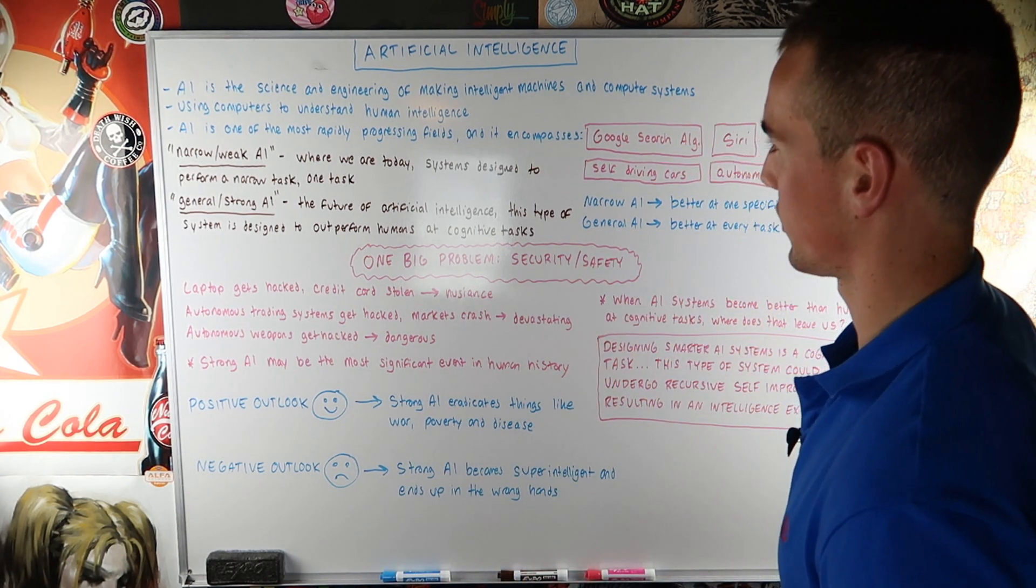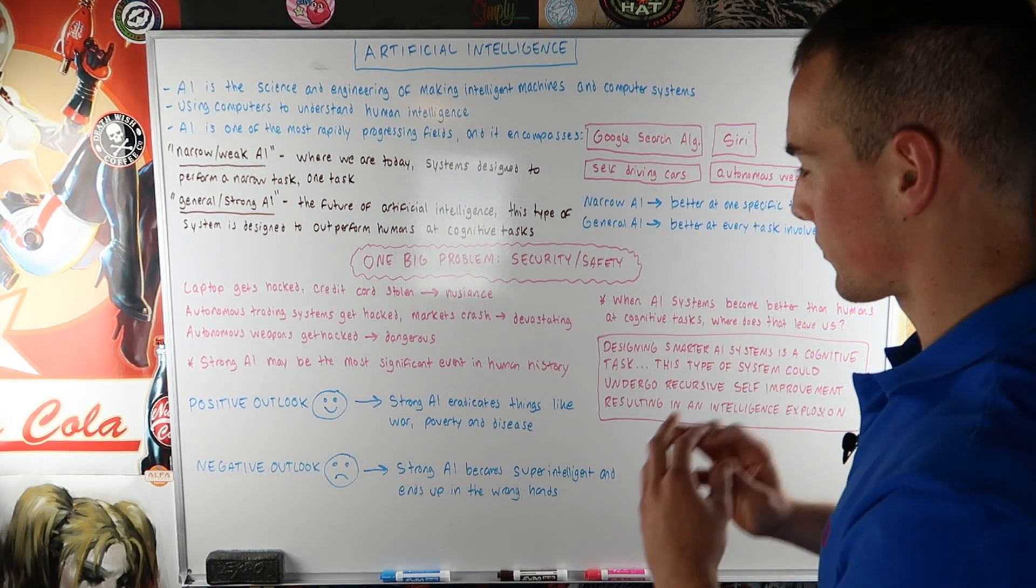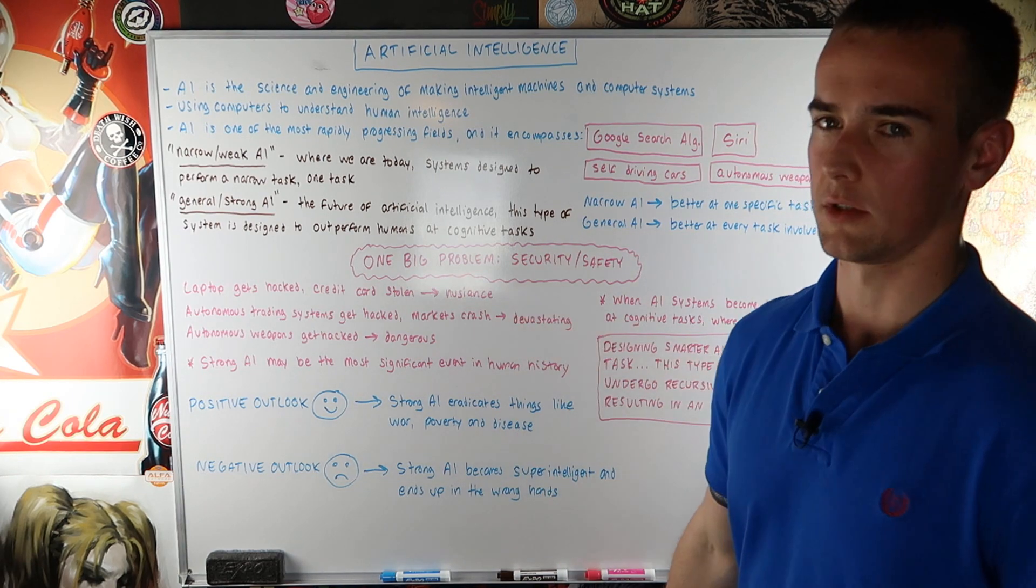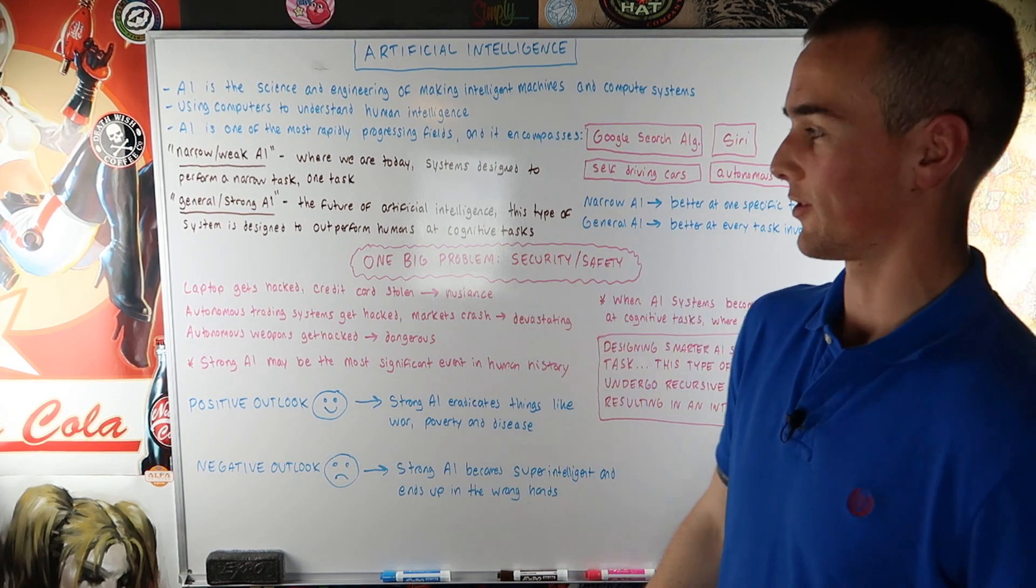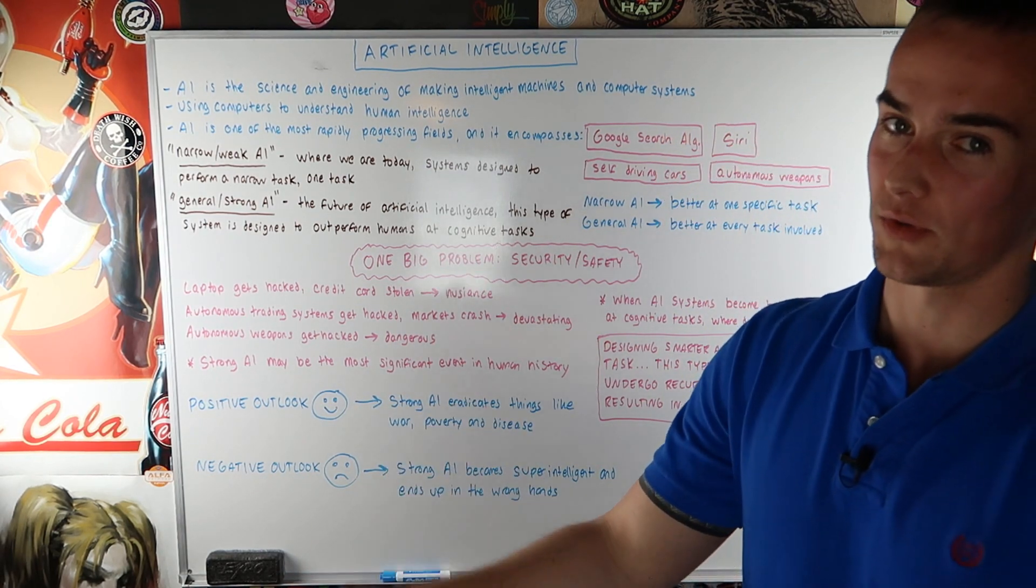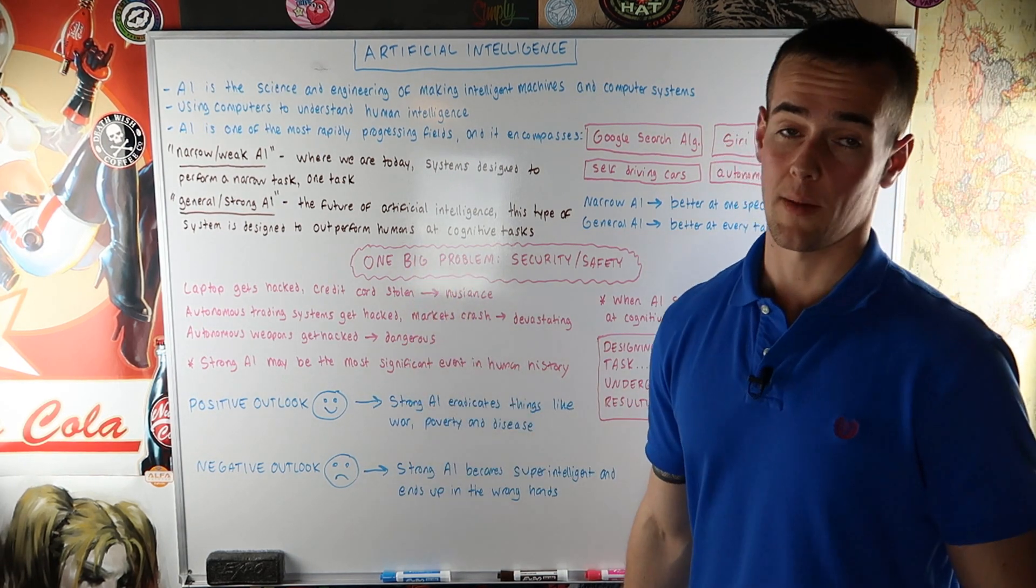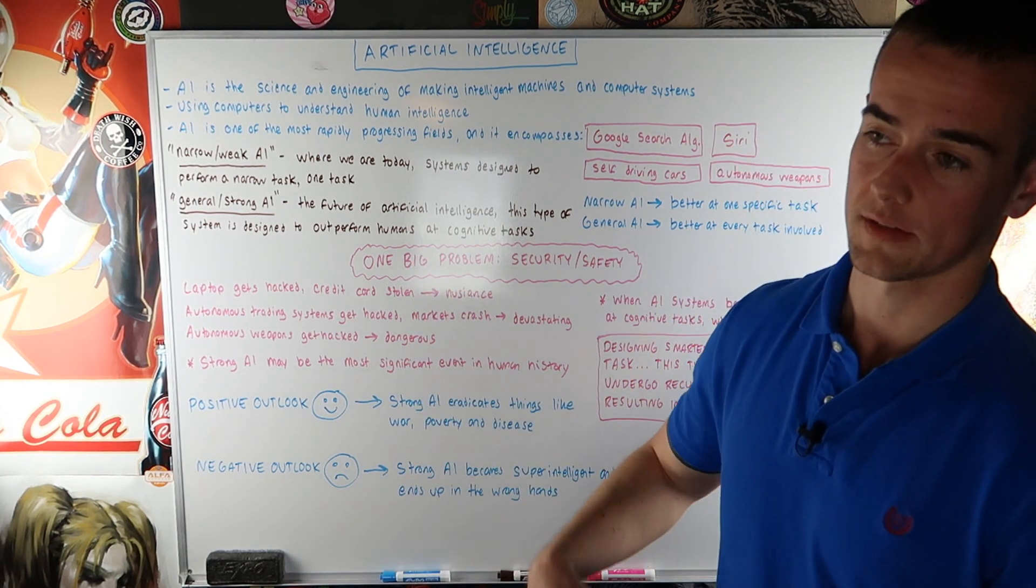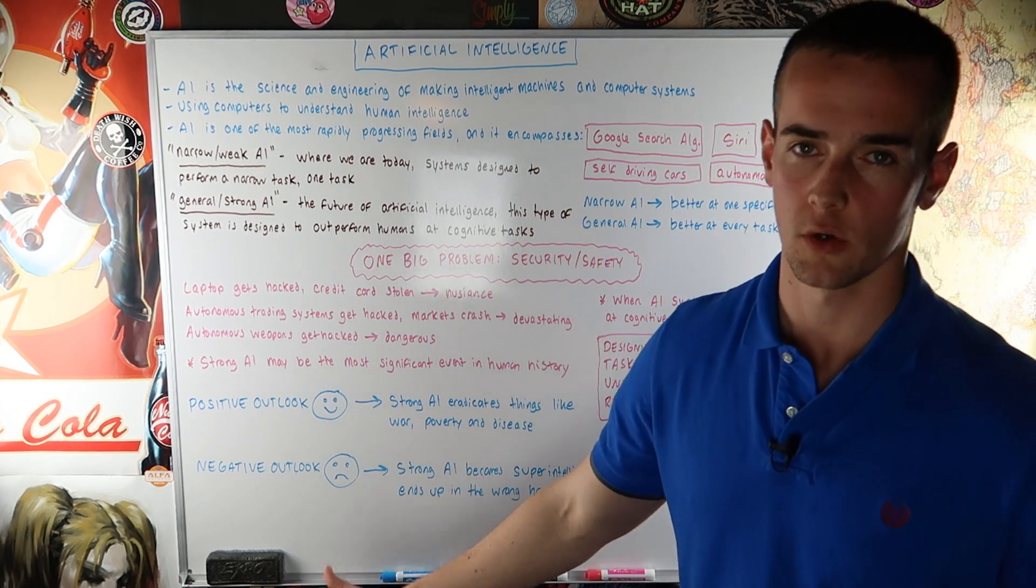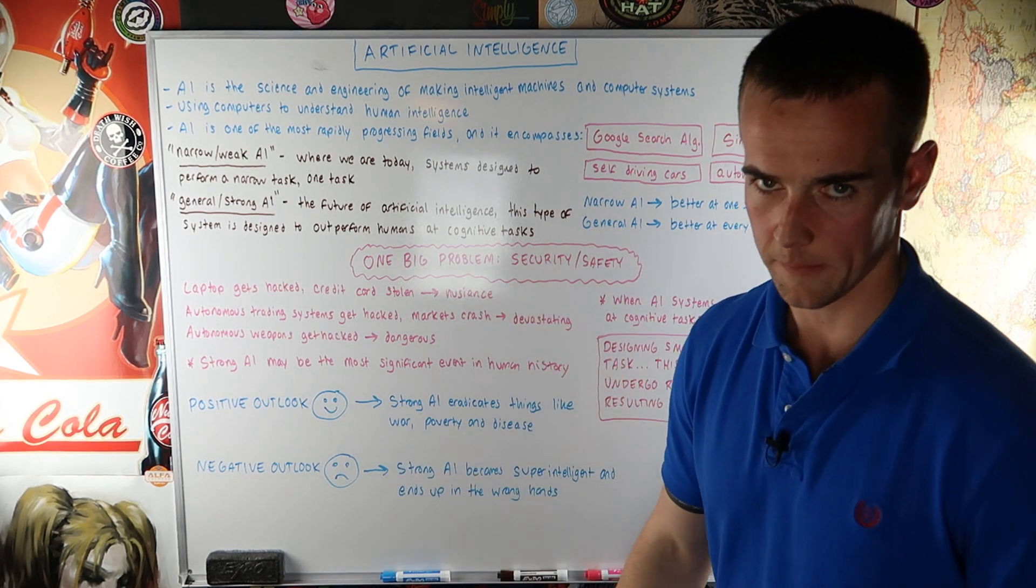So obviously there's one big problem with artificial intelligence and that is security and safety. So first let's just do an example here of just a couple of scenarios. So this is a scenario that a lot of us deal with. I just dealt with this two weeks ago believe it or not. Let's say your laptop gets hacked, your credit card is stolen. It's a nuisance. I just had my card stolen for like the third time two weeks ago. My laptop wasn't hacked but my card was stolen and it's kind of a pain. You've got to order a new card. The charges didn't go through or anything like that but you can usually get your money back. But it's a nuisance. It's something we deal with today.